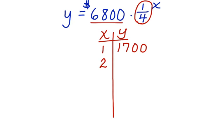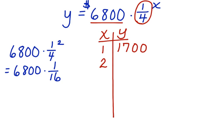Let's rewrite this so you can see it. $6,800 times one-fourth squared, which is the same as $6,800 times one-sixteenth. If we multiply $6,800 times one-sixteenth, it's the same as dividing $6,800 by 16, and our answer is 425.